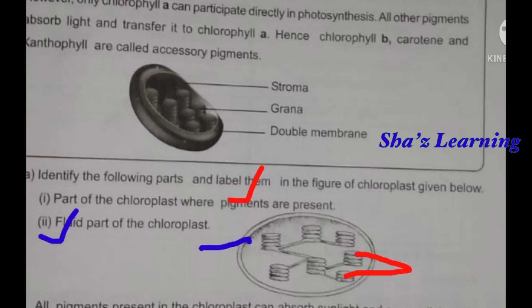In the red part of the chloroplast, the pigments are present. It is not a green color; it is not a fluid part. There is a gap, and it appears as a blue color — it is a fluid color.